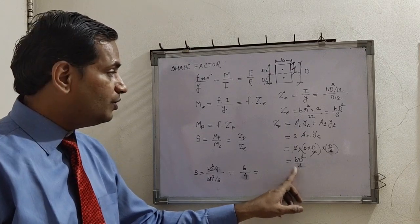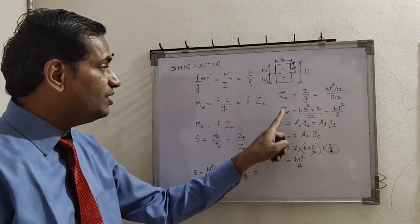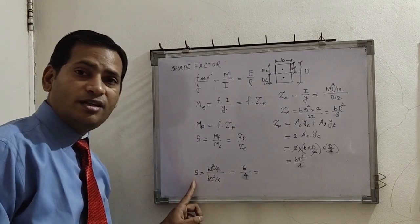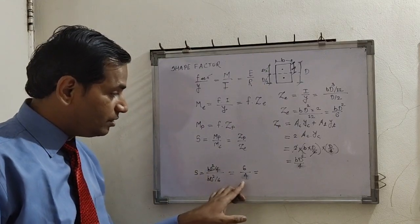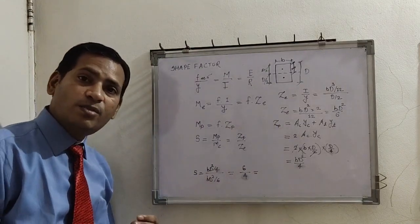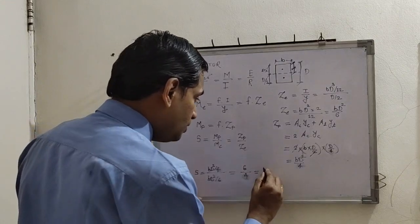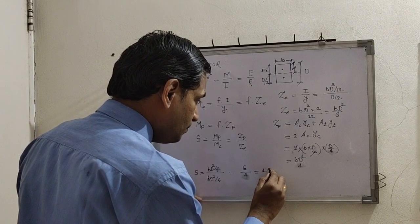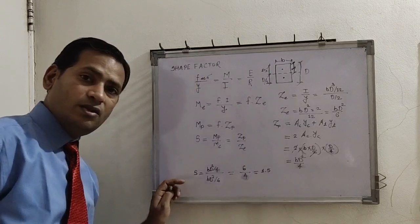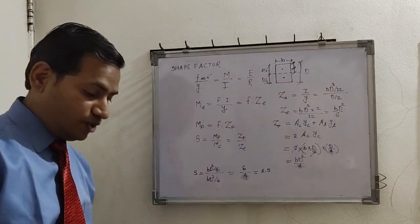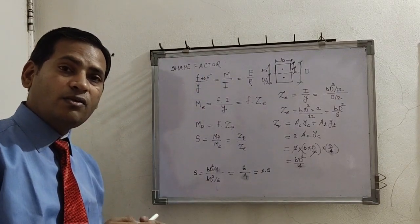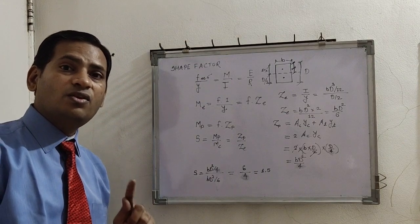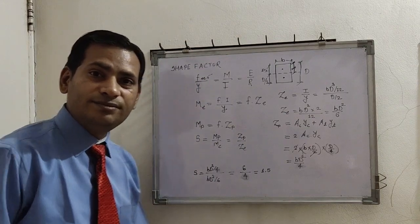Substituting Zp = bD²/4 and Ze = bD²/6 into the shape factor ratio: S = Zp/Ze = (bD²/4) / (bD²/6) = 6/4 = 1.5. So the shape factor for a rectangular cross section is 1.5, which is a constant.